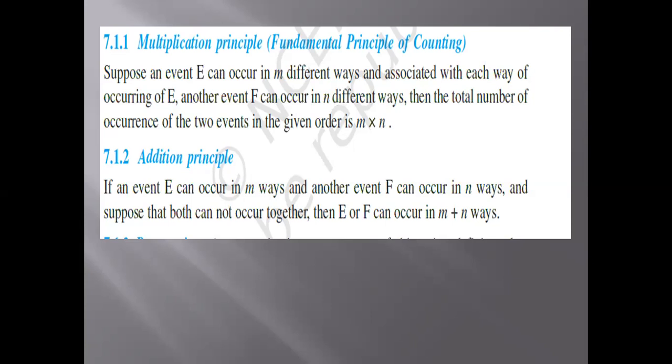So for the multiplication principle, where events E and F occur in m and n different ways respectively, the total number of occurrences will be equal to m into n.